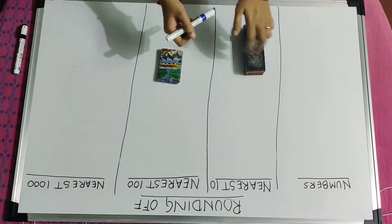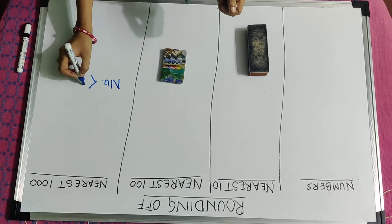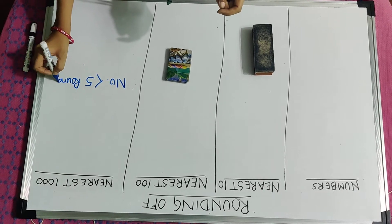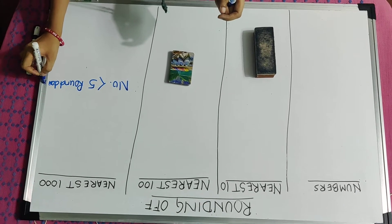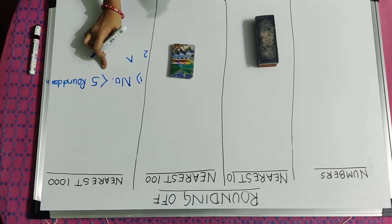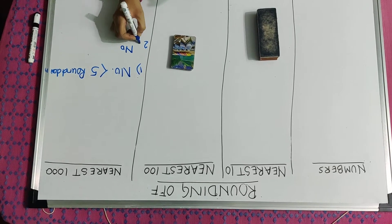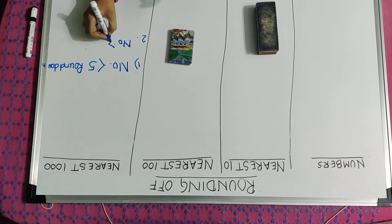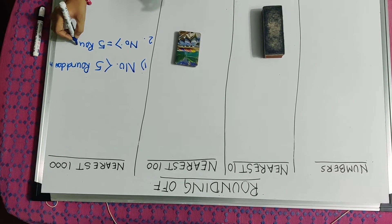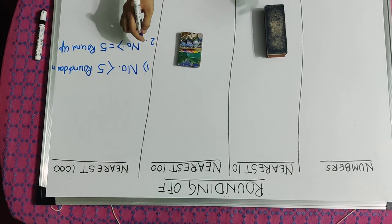Rule number 1 is if any number is less than 5 we will do round down. And if any number is greater than or equal to 5 we will do round up. Remember, children, 5 is included in rule number 2.